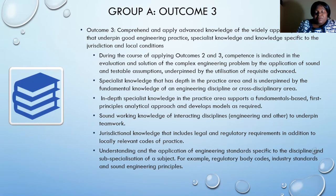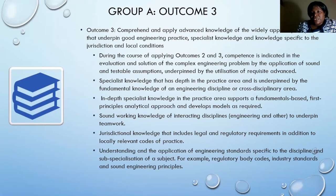For a professional engineer, the key outcomes are Outcomes 1, 2, 3, 9, and 10, and you need to be at level E, since this is mainly where you do most of the engineering work.